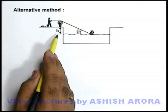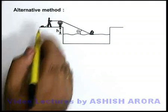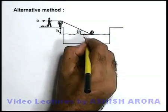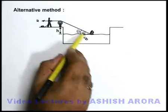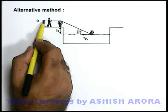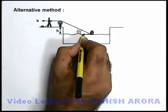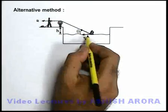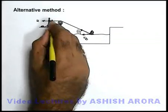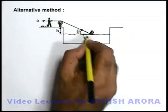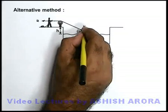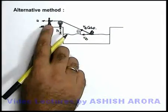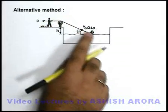Let us see an alternative method for the same problem. Here, if the boy pulls the string with speed u and the boat is moving with velocity v_b, again we can say that as the string length is constant, the speed with which the boy is pulling along the rope and the speed with which the end of the rope is moving along the rope must remain the same. In this direction, the speed with which the end of the rope is moving along the length is v_b·cosθ.